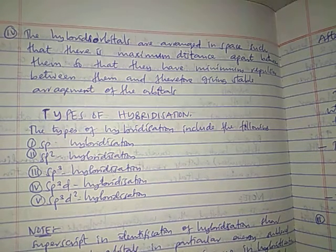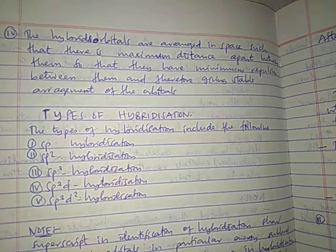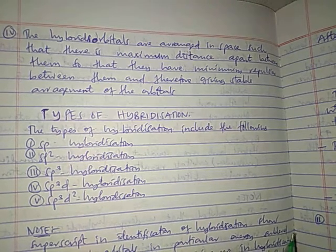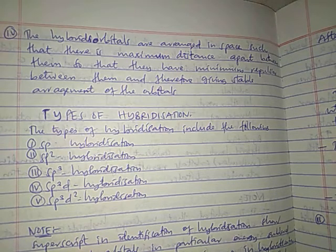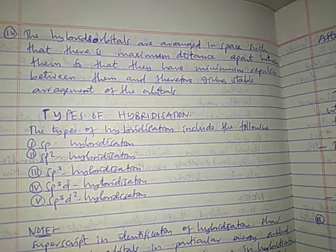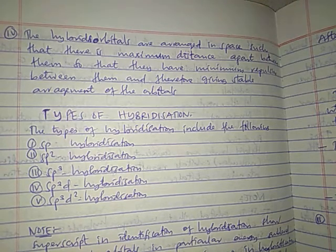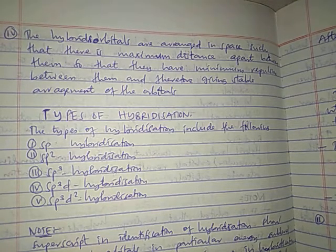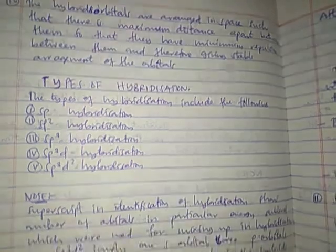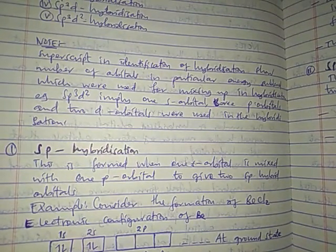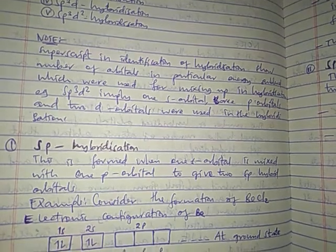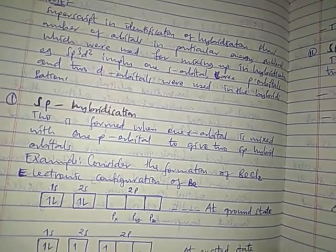The superscript in the identification of hybridization shows the number of orbitals in a particular energy sub-level which are used for mixing in the hybridization. For example, sp3d2 implies one s orbital, three p orbitals, and two d orbitals are used in the hybridization. In our discussion today we will start with sp hybridization.